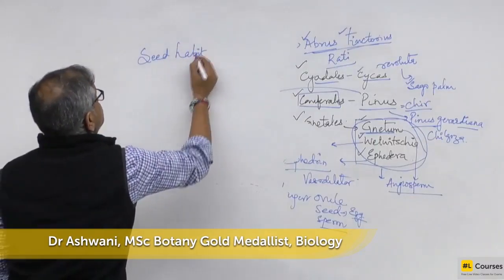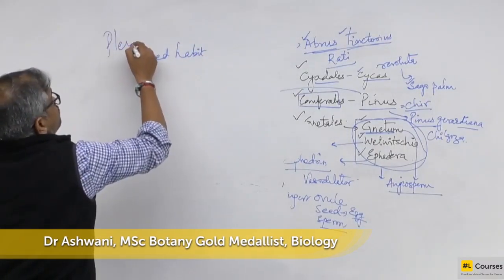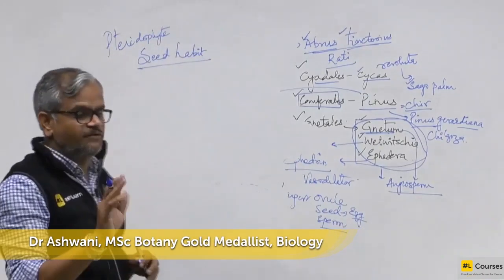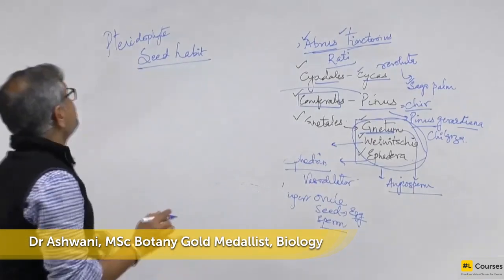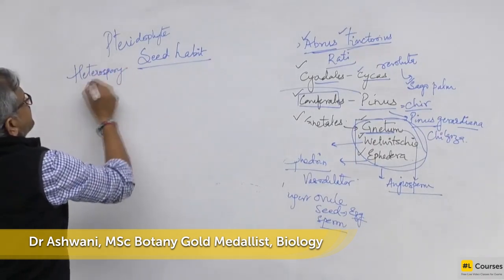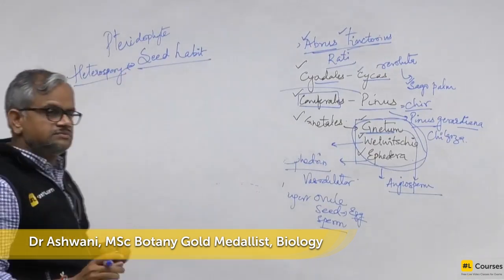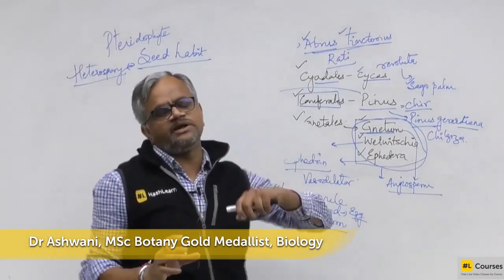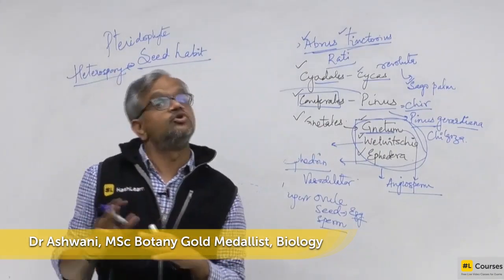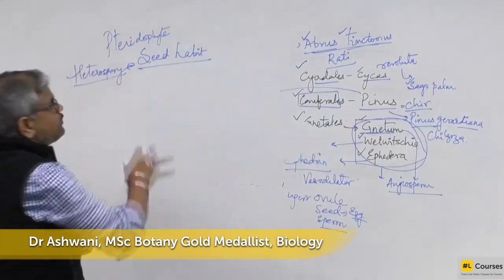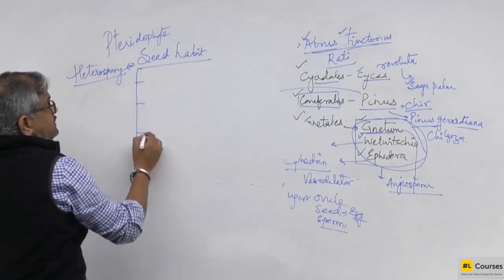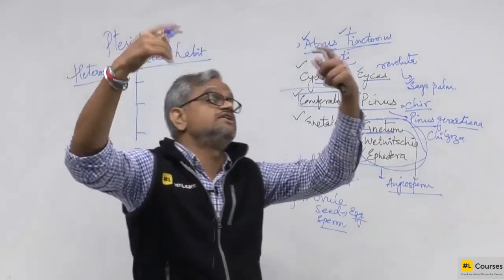Please remember that in pteridophytes, seed habit was there but seed formation was not. Seed habit came because they have two different types of spores — the smaller one is called microspore and the bigger one is called macrospore. When both spores are the same, it is called homospory; when different, it is heterospory — that is seed habit. This seed habit is the basis of how gymnosperms evolved.